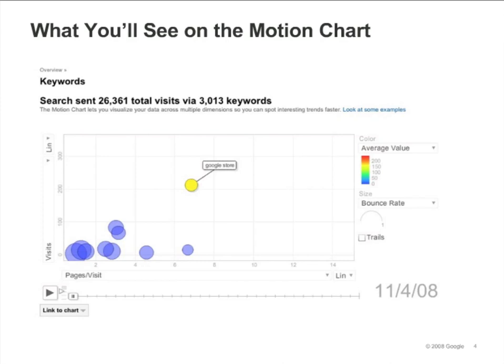In this chart, the X axis is Pages per Visit and the Y axis is Visits. The color of each dot represents the average value. The size of the dots represents the bounce rate.